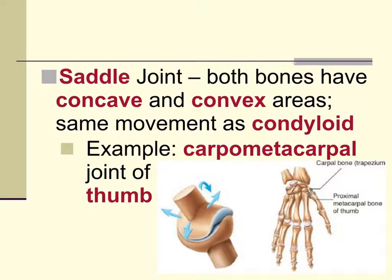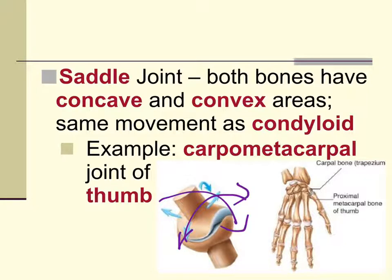The saddle joint also describes the shape of the surfaces of the two bone ends. Both bones have a concave and convex area, looking like a saddle. When those saddle shapes come together, they have the same type of movement as a condyloid joint — rocking back and forth in two planes of motion. An example is the carpometacarpal joint of the thumb only, not the other fingers — just the thumb's knuckle joint.